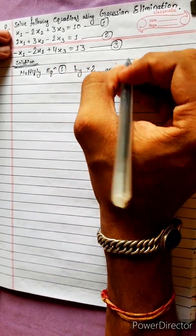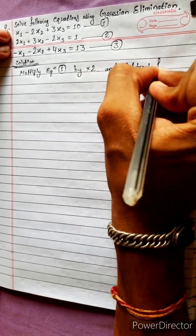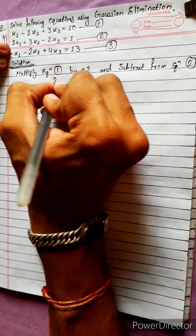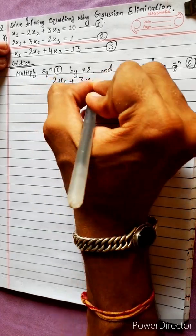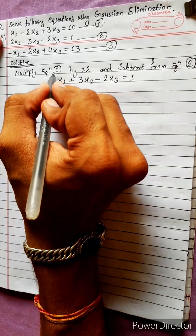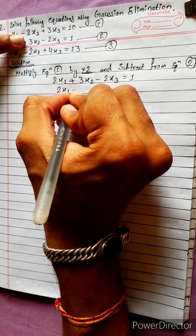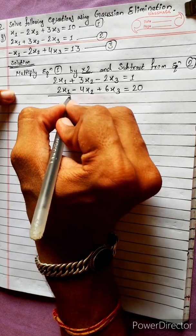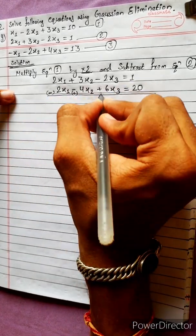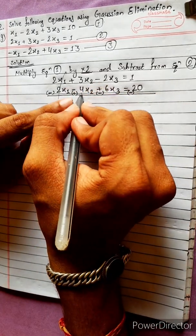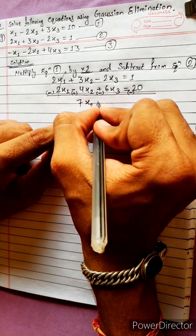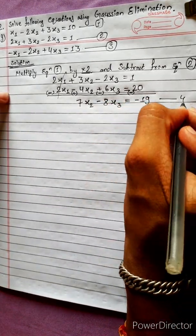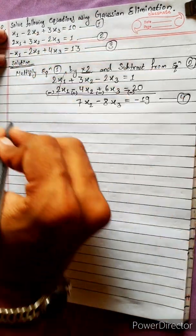We subtract from equation 2. So equation 2 is: 2x1 + 3x2 - 2x3 = 1. Multiply equation 1 by 2: 2x1 + 4x2 + 6x3 = 20. Now subtract — the x1 terms cancel, giving us 7x2 - 8x3 = -19. This is our equation 4.